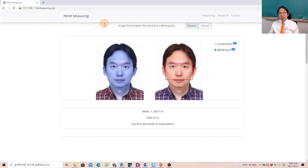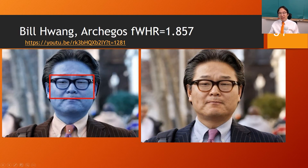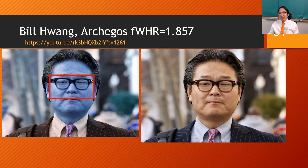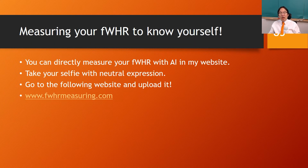Mine is 1.7. And Bill Hwang's is 1.9 — a very masculine face. That's bigger than typical Korean big company CEOs and close to or bigger than numbers for US CEOs. He is a very risk-seeking guy. He was investing into only a handful of stocks — five to six different stocks related to China and telecommunications. With $30 billion in assets, you need to diversify enough.